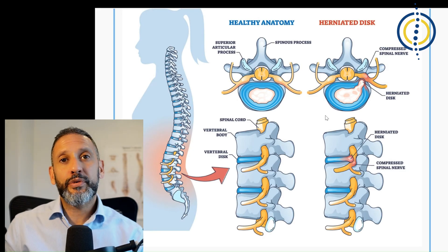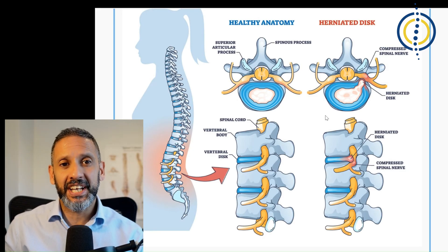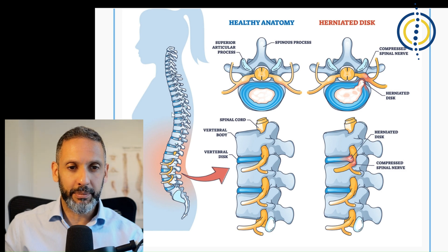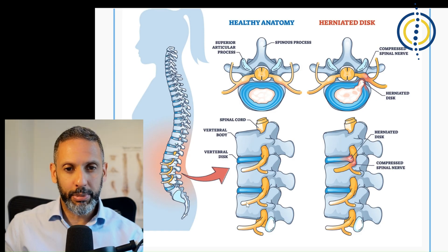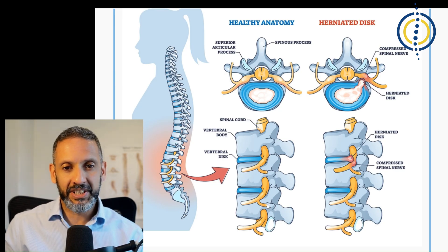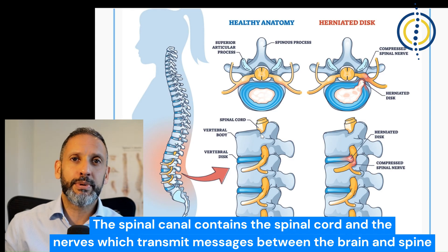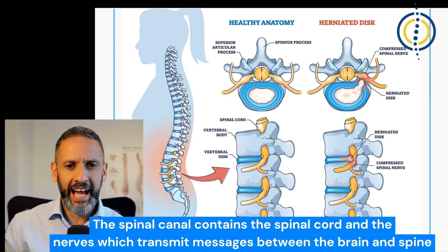Now let's quickly run through the anatomy so that we can understand the targets for the injections. Here is the human spine — it's made up of a stack of bones from the skull all the way down the back to the pelvis. Each bone is called a vertebra, which is a cylindrical block of bone at the front, with an arch of bones at the back. If we stack these up together they form a tunnel in the middle of the spine that goes all the way up to the skull, and that tunnel contains the spinal cord and the nerves that transmit messages between the brain and the spine.